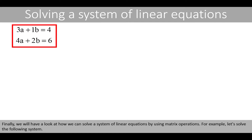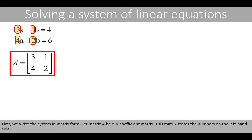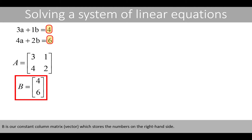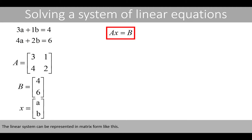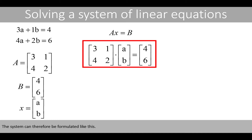Finally, we will have a look at how we can solve a system of linear equations by using matrix operations. For example, let's solve the following system. First, we write the system in matrix form. Let matrix A be our coefficient matrix — this matrix stores the numbers on the left-hand side. B is our constant matrix, which stores the numbers on the right-hand side. And X is our variable column vector. The linear system can be represented in matrix form, and the system can therefore be formulated like this.